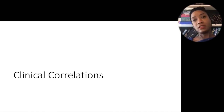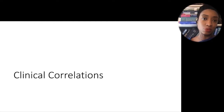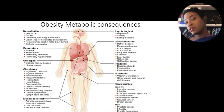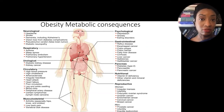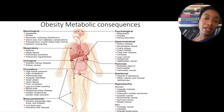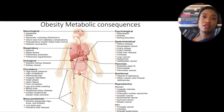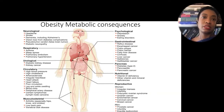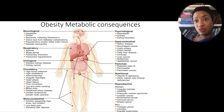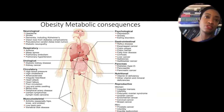Excess weight wreaks havoc on literally every portion of the body. As a gastroenterologist, I see reflux, esophageal cancer, colon polyps leading to colon cancer, and fatty liver disease. Without treatment — which is just weight loss — fatty liver turns to fibrosis, which is scarring of the liver, and over time that becomes cirrhosis. Fatty liver disease is now one of the main reasons patients are getting liver transplants in this country — no longer just alcohol and hepatitis C. Once a patient has cirrhosis, they're at higher risk for liver cancer, which is why we screen those patients every six months.